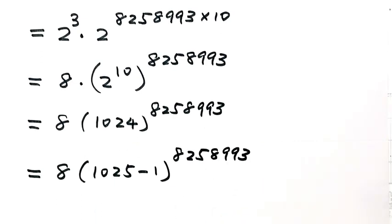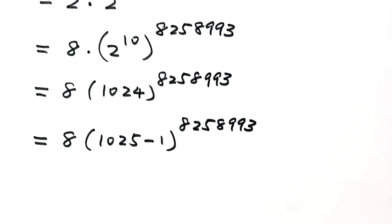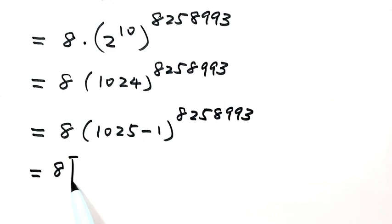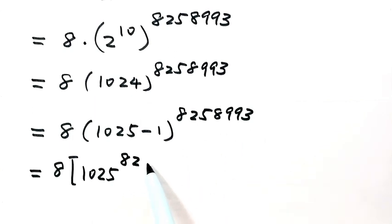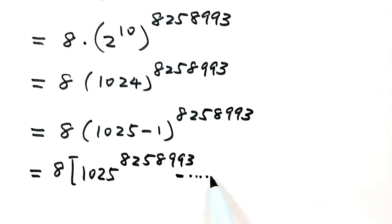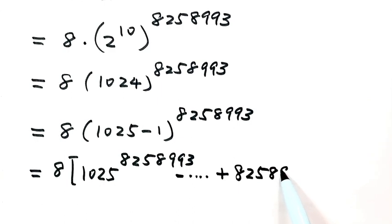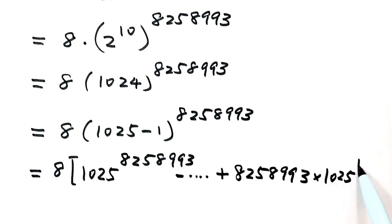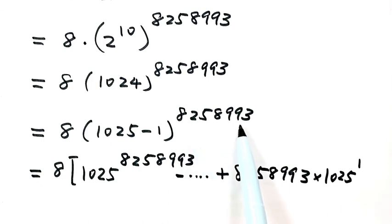For 1024, we can write it as 1025 minus 1, then raise that to this power. We can use binomial expansion using the binomial formula. The first term is just 1025 to this power. Looking at the last two terms: the term before the last is this number times 1025 to the power of 1, and the last term is negative 1 to the power of R — since R is odd, that's negative 1, giving minus 1.